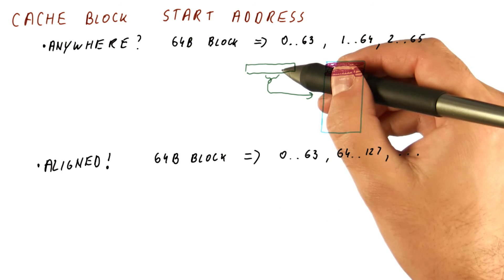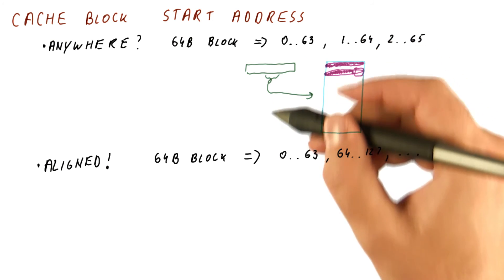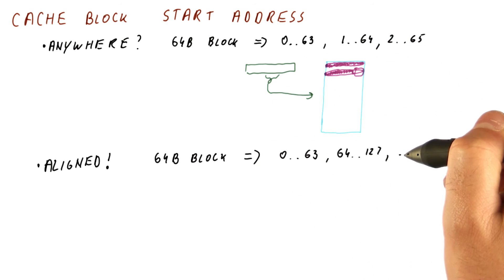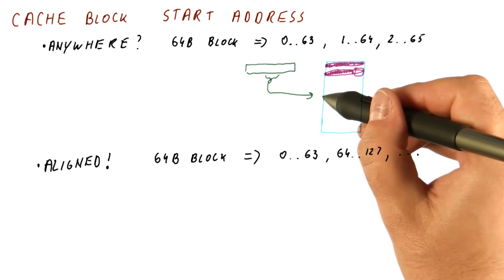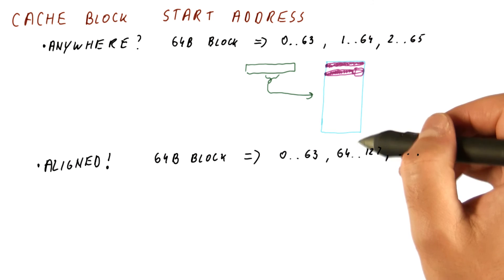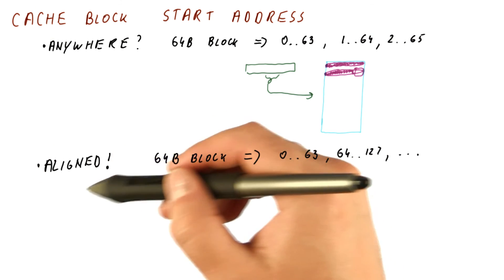That also allows us to simply use some bits of the address that tell us which of these blocks we are talking about and index into the cache and find it there. So there is only one place in the cache where each of these will fit. So for all reasonable caches, we will really only consider aligned blocks.